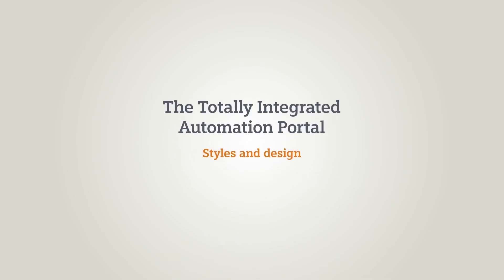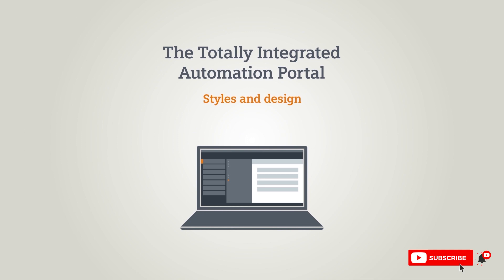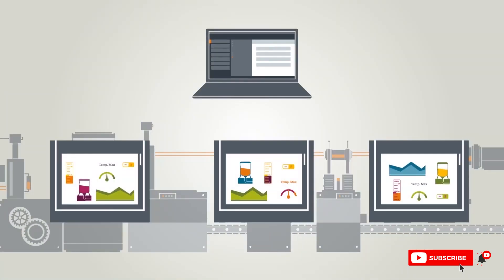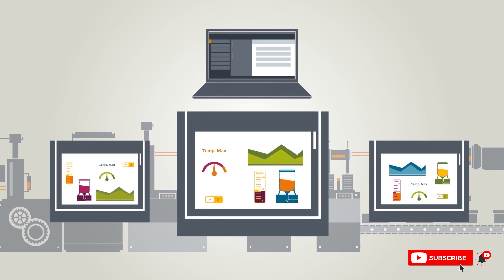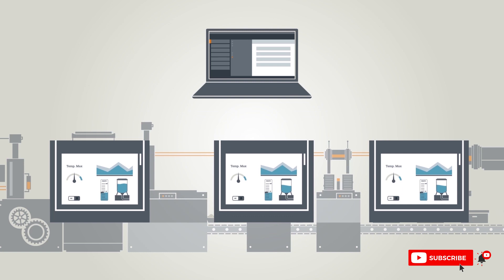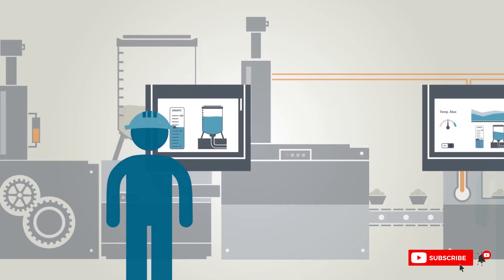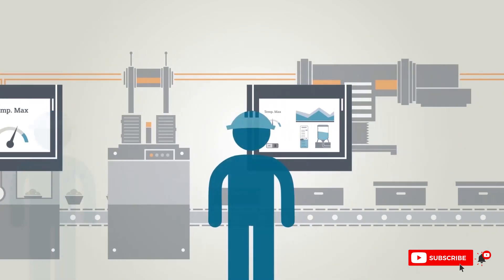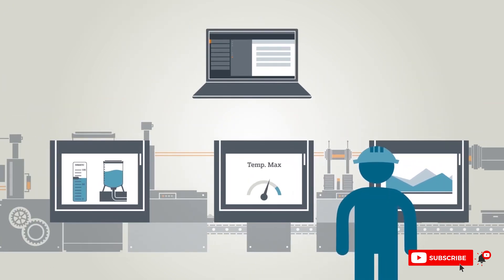In this chapter you will learn about working with styles and designs in the TIER portal. Because visualization is the hallmark of your machine, the operation should be designed in an intuitive and visually appealing way. The user interface must be designed to make all important information and user options available to the operator at a glance, without overwhelming him with visuals.